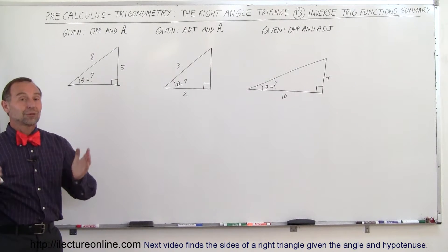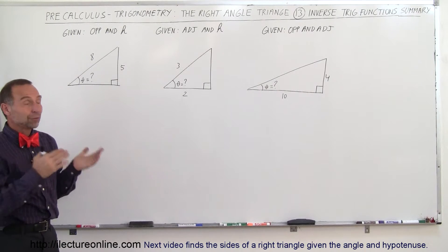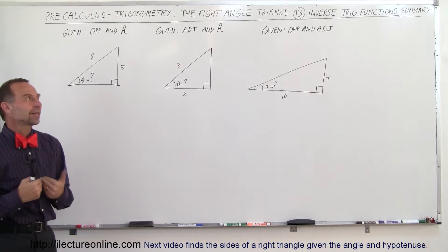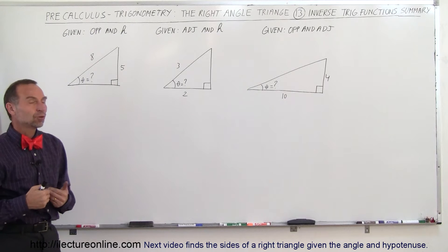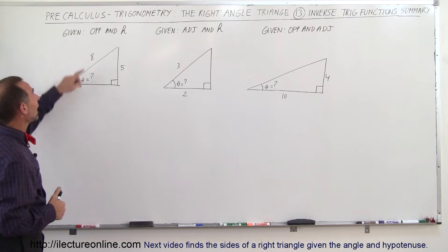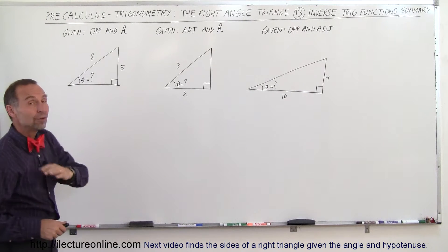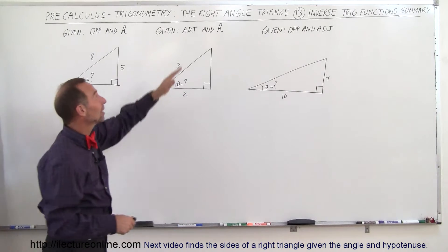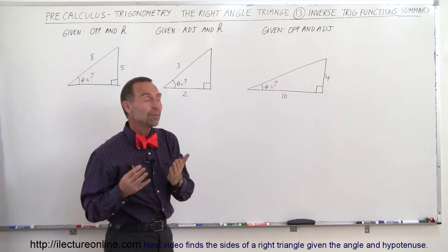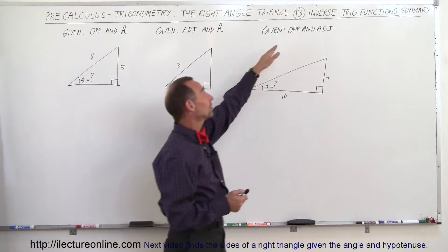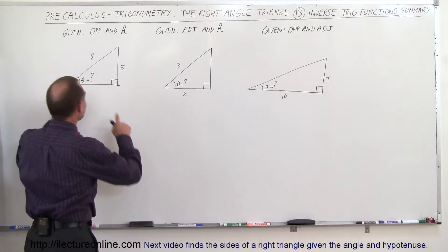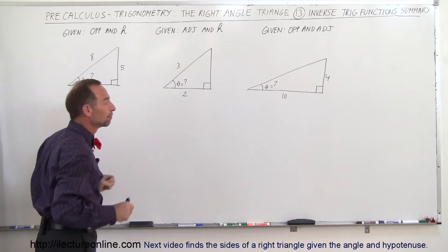Welcome to our lecture. Now to summarize what we've learned with the inverse trigonometric identities. You've either been given the opposite side and the hypotenuse, or the adjacent side and the hypotenuse, or the opposite side and the adjacent side. In each case you're trying to find the angle.